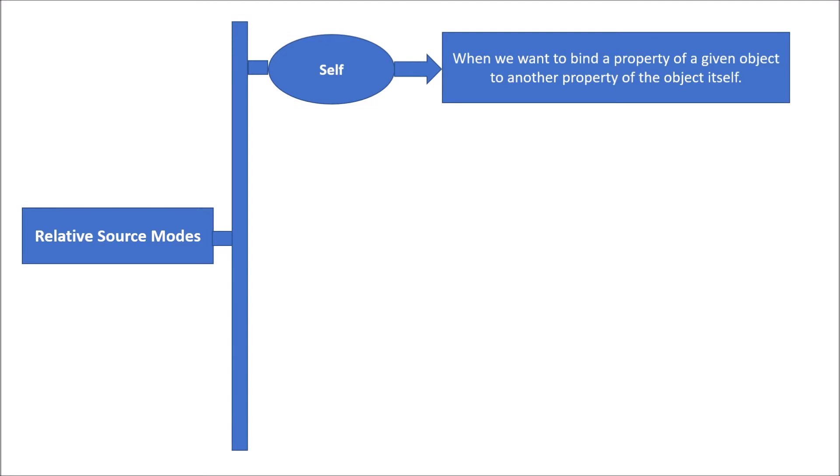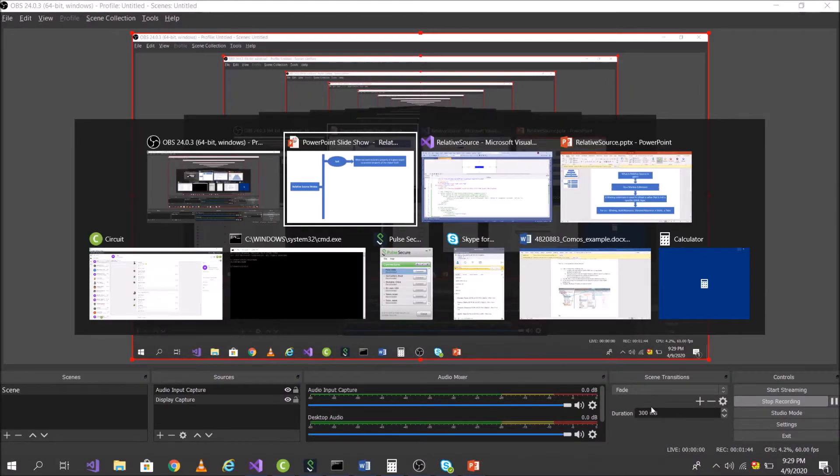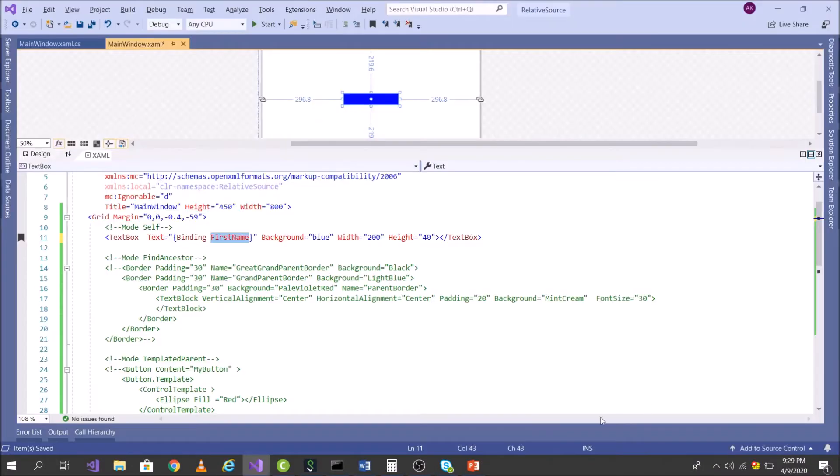In Self mode, I will use this mode when I want to bind the property of an object to a property of the same object. Let's come back to Visual Studio to see what that means.